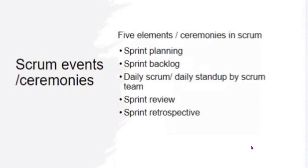Then it moves to the Sprint Backlog, where the team deliberates. During the Daily Scrum, the Scrum Team comes together and discusses the Product Backlog. It's like when there's a syllabus for a course — it is divided into semesters. Similarly, the backlog is divided into Sprints to make it sizable and achievable. Each Sprint could take 10 working days, two weeks, or sometimes a month.